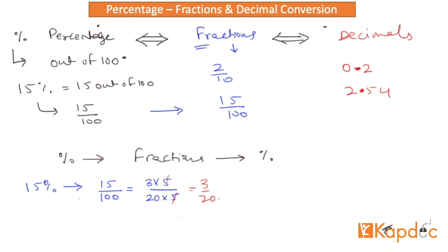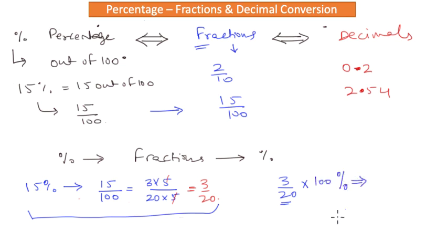Now given that I have obtained this fraction how do I convert this 3 over 20 back to percentage? The trick is whatever fraction you have been given you simply multiply that with 100 and carry out your calculation and put a percentage sign in front. So 20 cancels with 100. It becomes 5 and 5 and 3 get multiplied. So it becomes 15%. So you get back the number that you started with originally.